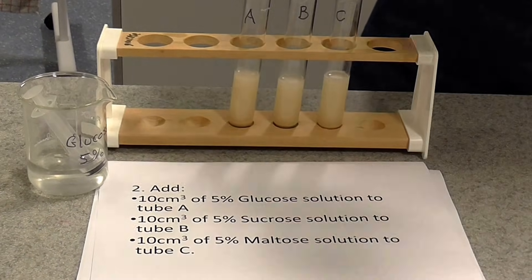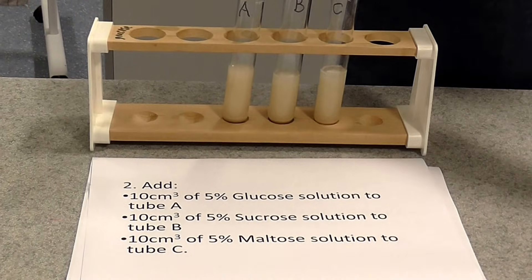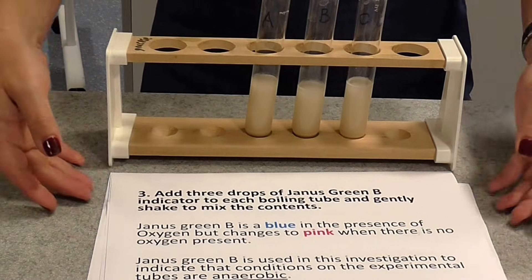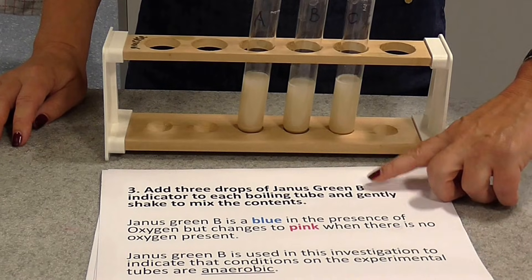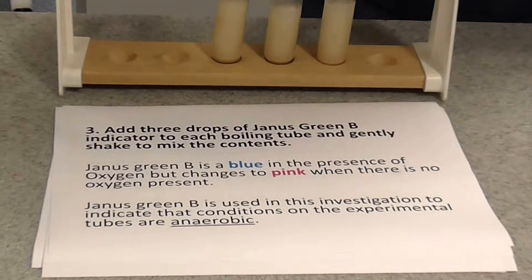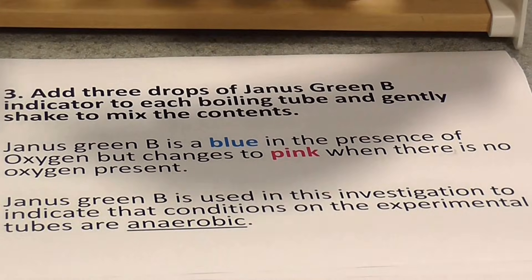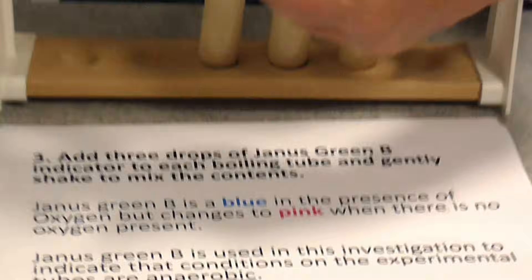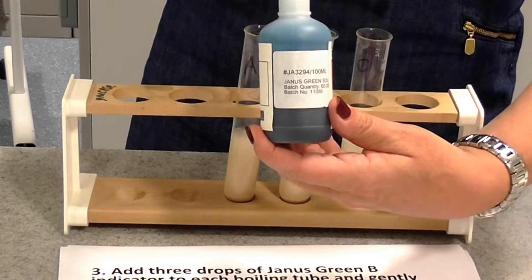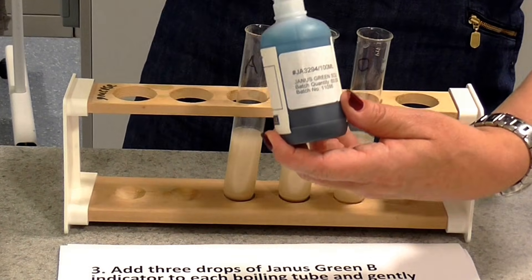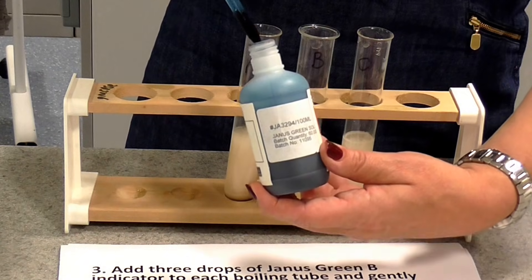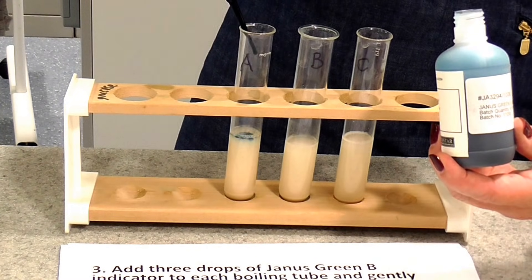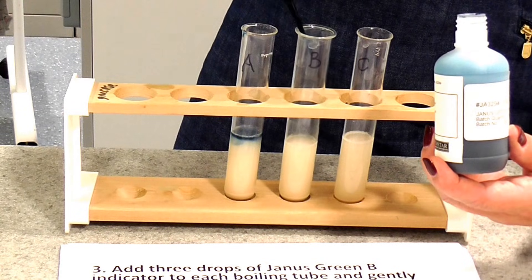The next step is to add an indicator called Janus Green B. All we're going to do is use a dropper to put three drops of this indicator. It is a kind of bluey-green colour — more blue. Add about three drops of that to each of your tubes.